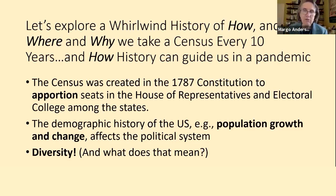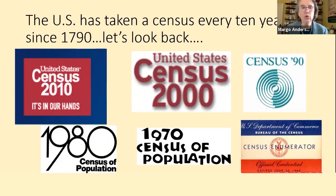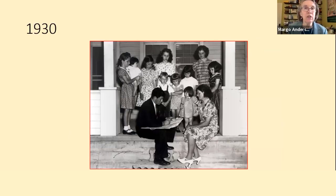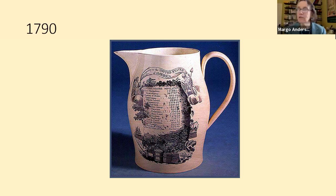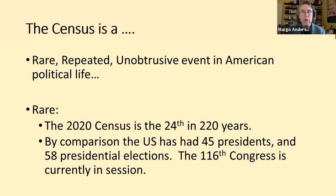The US has had a remarkable pattern of population growth and change — we are a very diverse society and always have been, going back into the 18th century. We've done the census 24 times. It's a rare, repeated and very unobtrusive event in American political life. We've done it 24 times in 220 years. By comparison, we've had many more presidential elections, and we are at the 116th Congress, as opposed to only the 24th census.